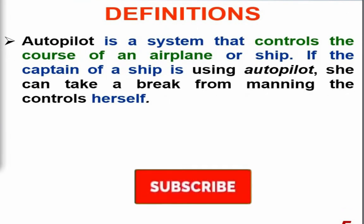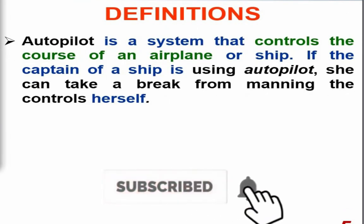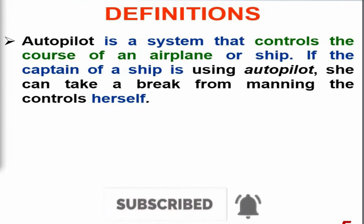The actual definition of the autopilot system: autopilot is a system that controls the course of an airplane or ship, and some modern-day vehicles are also equipped with such a system. If the captain of a ship is using autopilot, she or he can take a break from manning the controls.